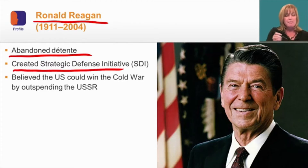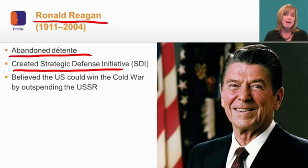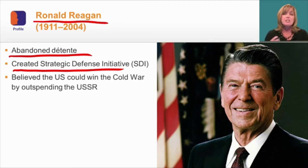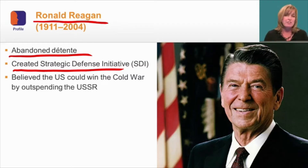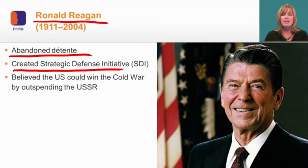Reagan created a program called the Strategic Defense Initiative — a system of satellites that could be launched into space to shoot down any incoming missiles. This was a huge threat to the Soviets because they felt such a program was possible but that they could not enact one of their own to protect the Soviet Union. The fact that it was never deployed didn't really matter; it was the threat of such a deployment that affected the Soviet response.